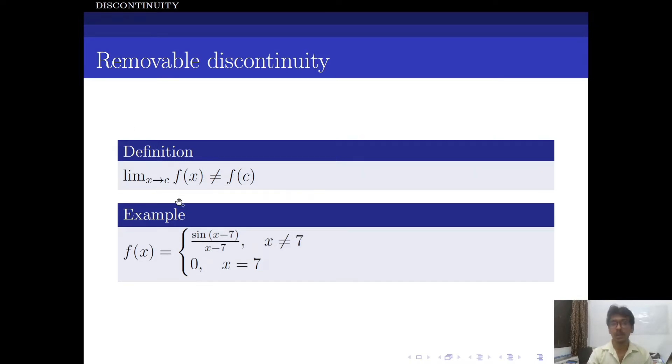This value may not exist. Even if the value does not exist, that leads to four different kinds of discontinuity. Here in removable discontinuity, the limit must exist and must not be equal to f(c).